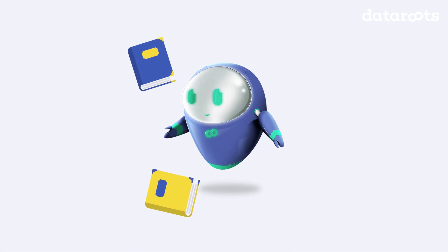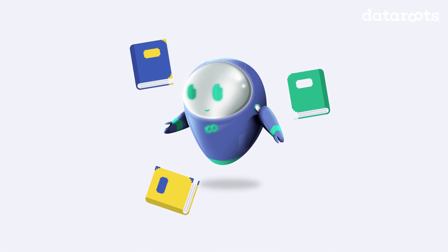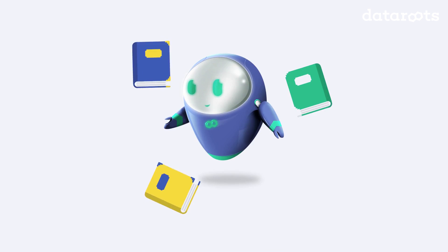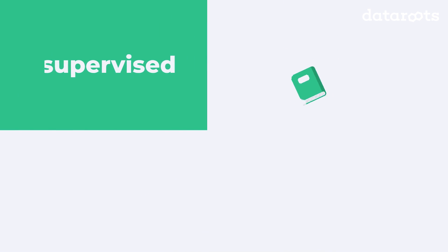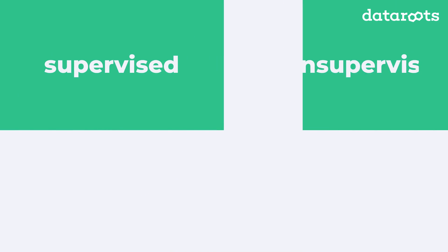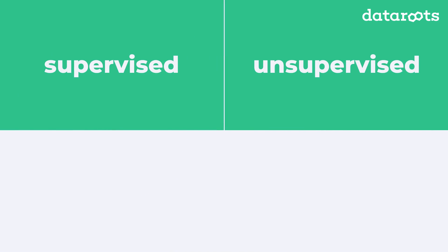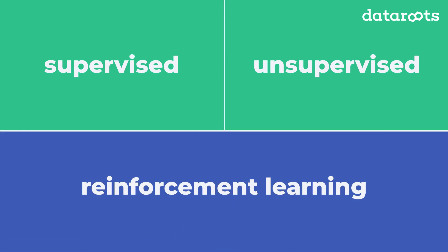In machine learning, you can distinguish three families of learning methods: supervised, unsupervised, and reinforcement learning. But what are they, and how are they different?